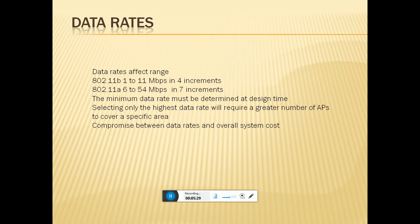The data rate effective range: 802.11b supports 11 Mbps in 4 increments, and 802.11a supports 6 Mbps in 7 increments. The minimum data rate must be determined at design time, selected when live data covers a large number of applications and a specific coverage area. Thank you.